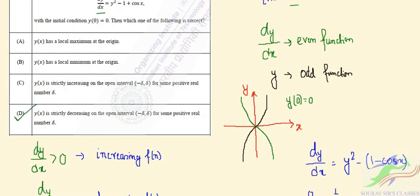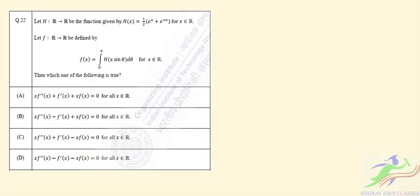So that was question number 21. Question number 22: let h be defined on the real space by h(x) = half of (e^(ix) + e^(-ix)), x belonging to the reals. Let f be a function defined by an integral. We have to find which one of the following is true.